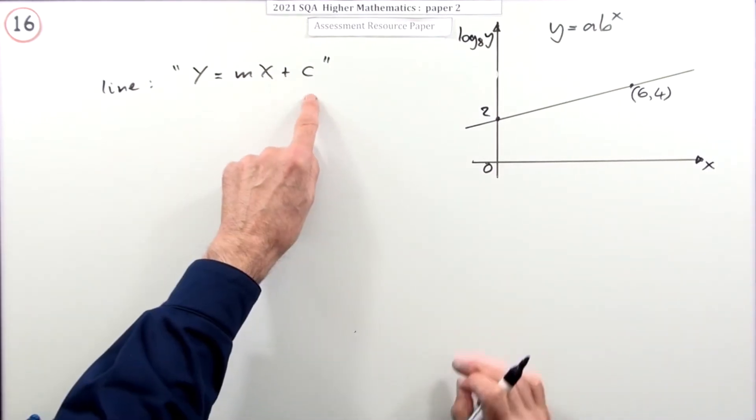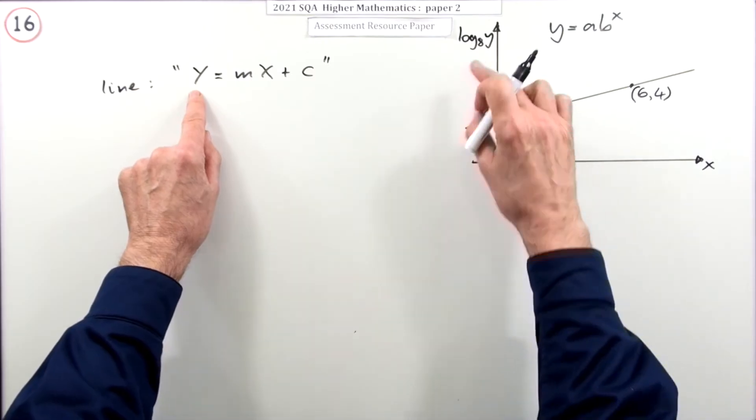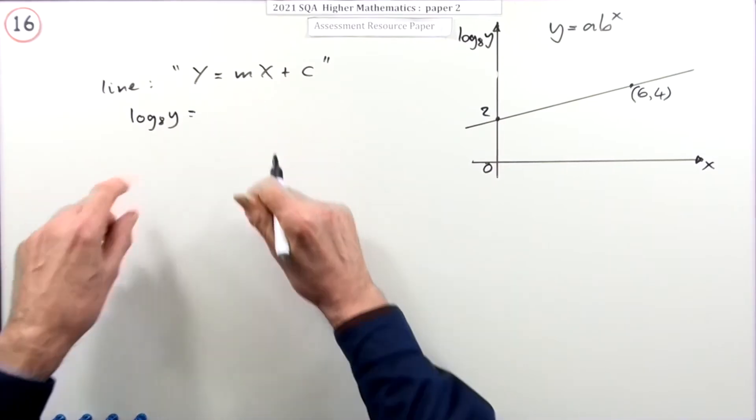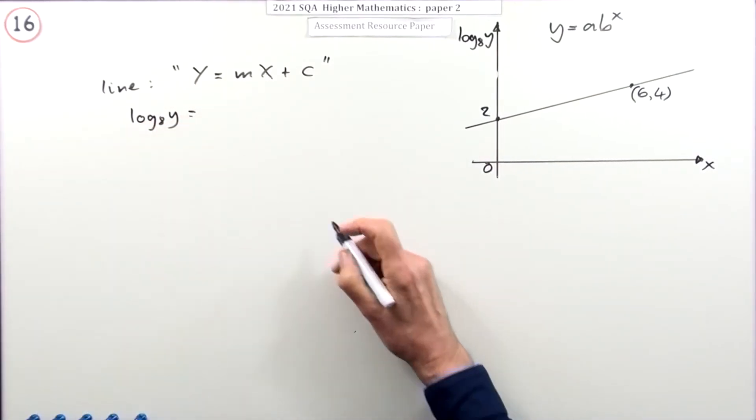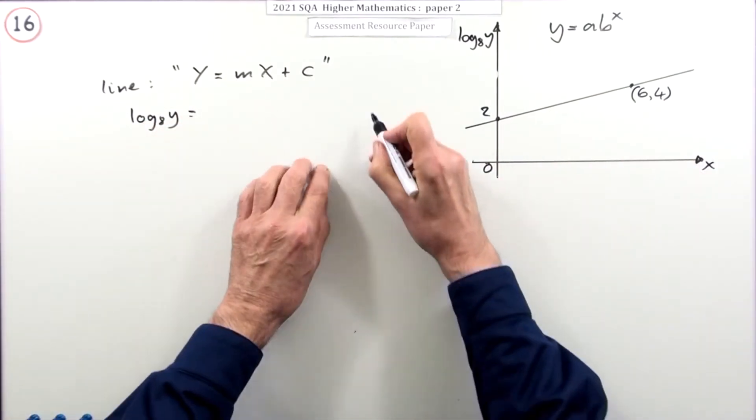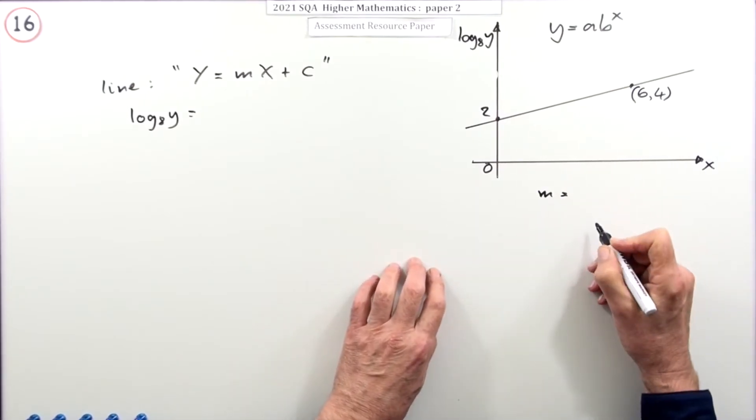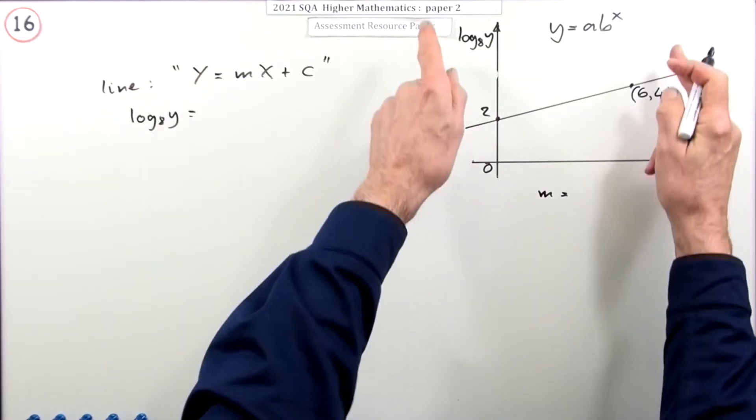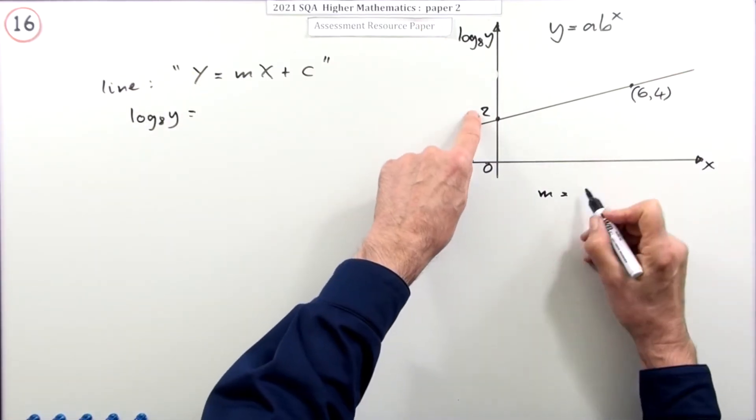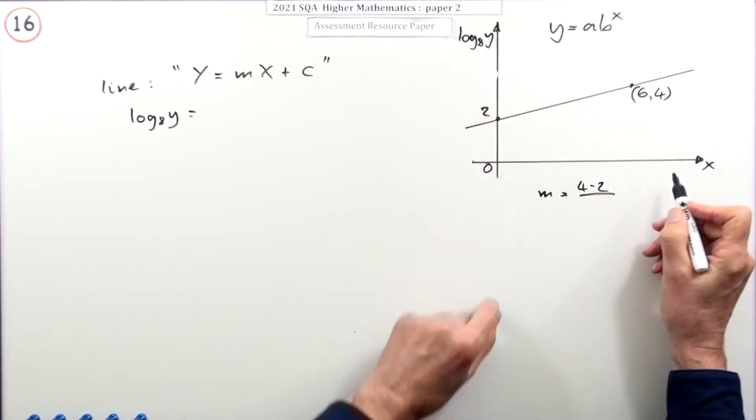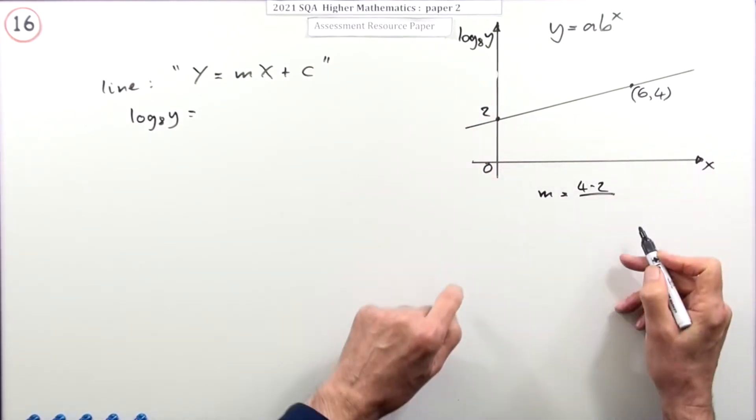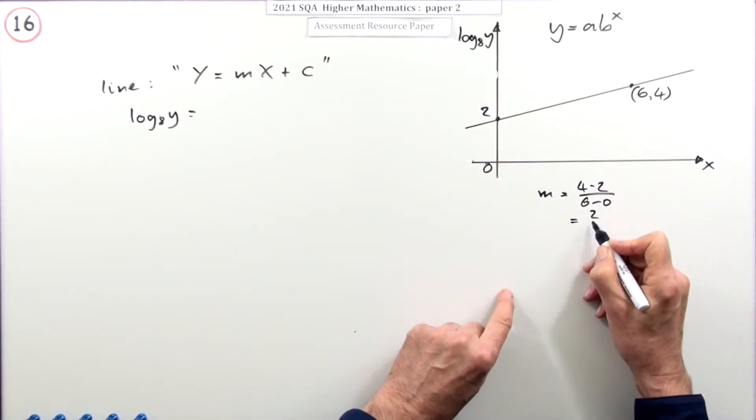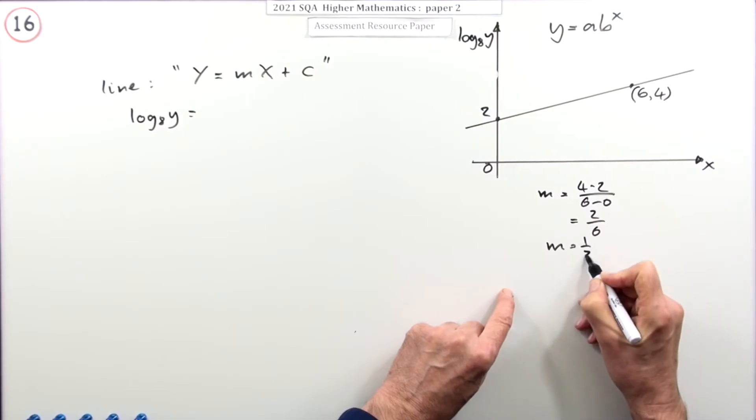So, using that, I know the C cuts at two. I know the Y, that's a log. So, log base eight of Y. That's what the Y was. I haven't got the gradient yet. Might as well work that out just now. What's the gradient of that line? Well, it'll be the difference in the big Ys up the ways. That's the four take away the two, divided by the difference along the way. That's the six take away the zero. So, it's two upon six. So, the gradient of that line is a third.